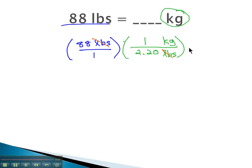Now we'll see the pounds divide out, and when we multiply across, 88 times 1 kilogram is 88 kilograms. 1 times 2.2 is 2.20, and then we simply have to divide 88 by 2.20, and we find out that 88 pounds is equal to 40 kilograms.